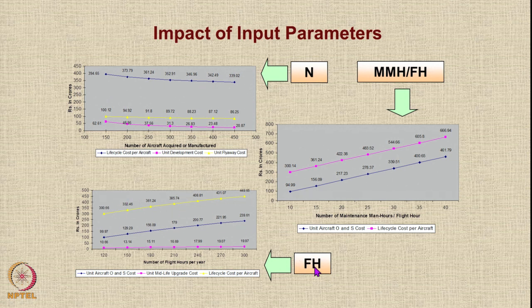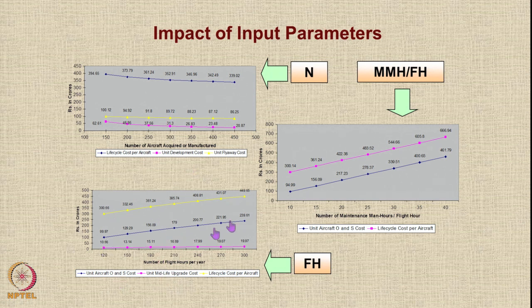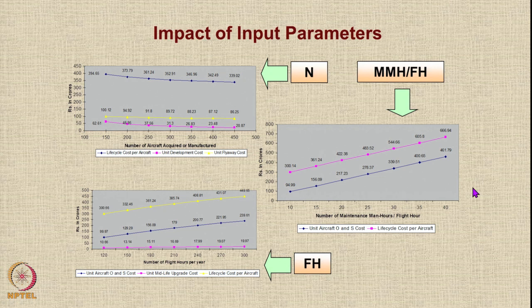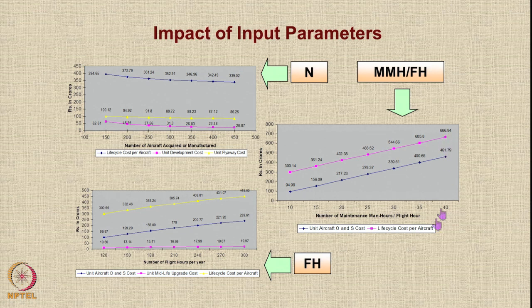Another graph shows the effect of annual flight hours on costs. Unit development cost does not change much, but the operations and support cost — the blue line — goes from 100 crores to 239 crores as flight hours per year vary from 120 to 300. The effect of MMH/FH is a linear variation: at 10 MMH/FH costs are very low, but at 40 MMH/FH costs are very high. Life cycle cost per aircraft increases from 300 to 666 crores when MMH/FH becomes four times more.